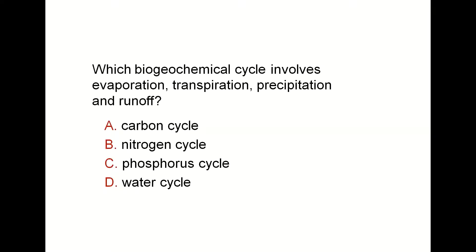Which biochemical cycle involves evaporation, transpiration, and precipitation? Evaporation is the changing of water into water vapor by heating. Transpiration is the process by which plants lose water as vapor through their stomata on leaves and green stems. Precipitation is the falling of snow or rain. Runoff is water flow. The cycle that includes all of these is the water cycle.